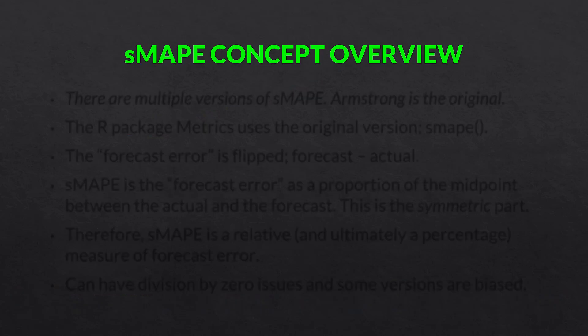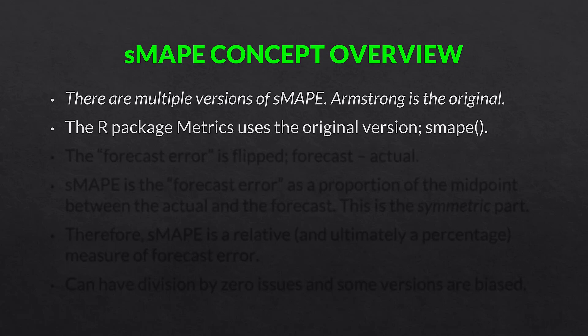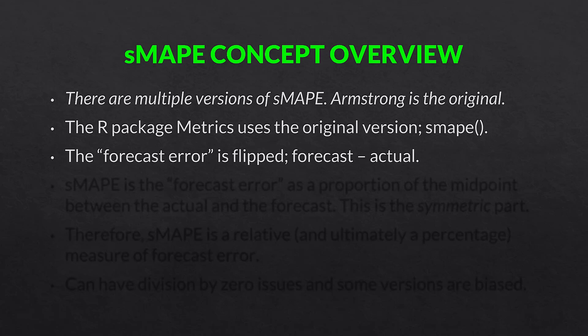Now for the SMAPE concept overview, the meat of this video. The first thing to know is that there are multiple versions of SMAPE — three or four at least. The one cited as Armstrong is the original, and that's what we'll use in this video. The R package 'metrics' uses the original version. Note that SMAPE's formula is a bit different — the forecast error is written as forecast minus actual rather than actual minus forecast, but since we take the absolute value, it doesn't matter in practice.